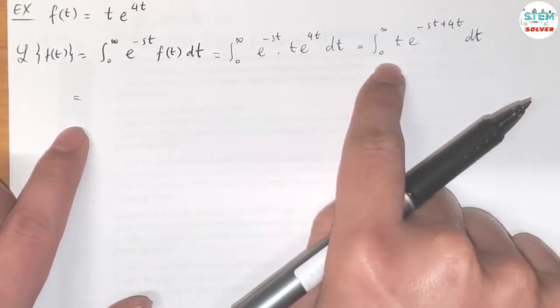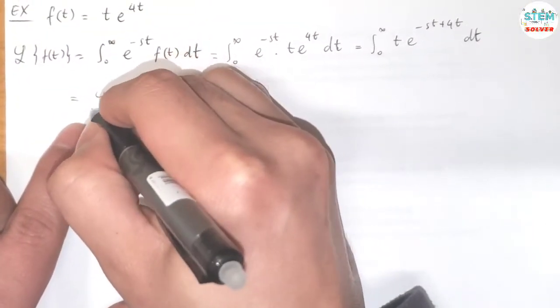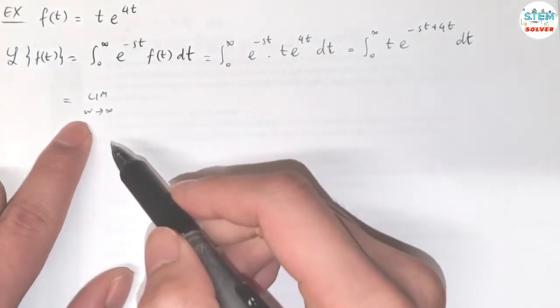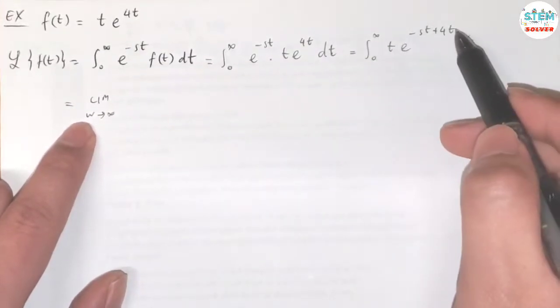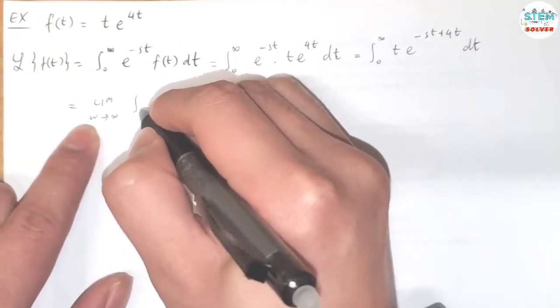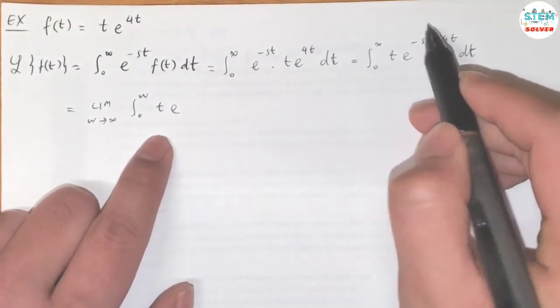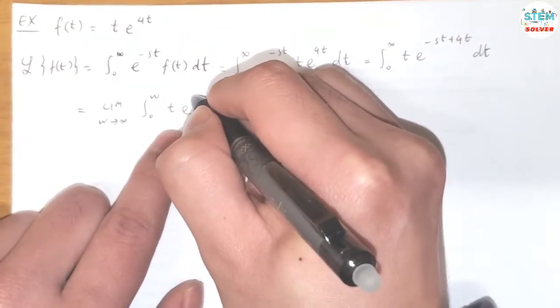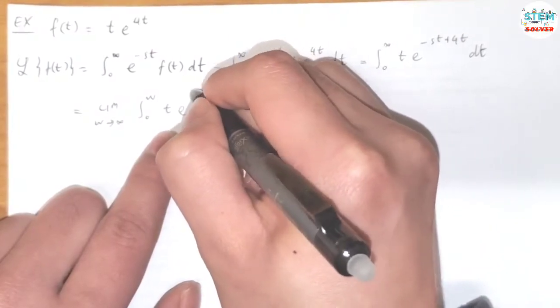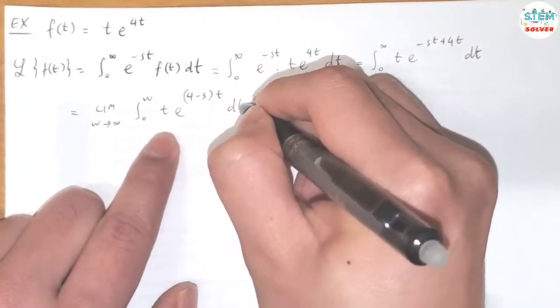So this is an improper integral, so we have to have the limit as w goes to infinity. You can use whatever letter here as long as it's different from this t, integral from 0 to w of t e to, factor out the t here. So I have 4 minus s times t dt.